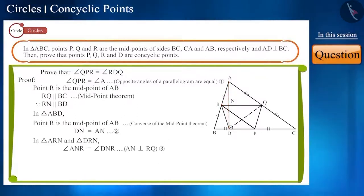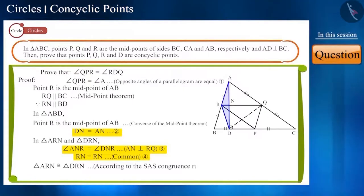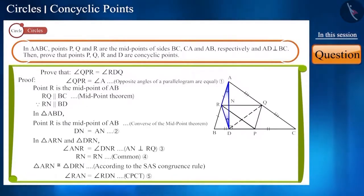From equations 2, 3 and 4 we can say that triangles ARN and DRN will be congruent according to the side angle side congruence rule. And we know that the corresponding parts of congruent triangles are equal. Therefore, their corresponding angles will also be equal. That is, we can write angle RAN and angle RDN as equal.